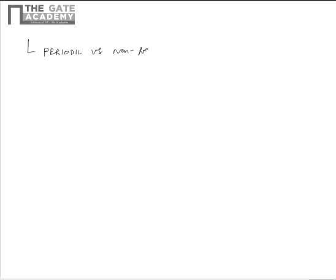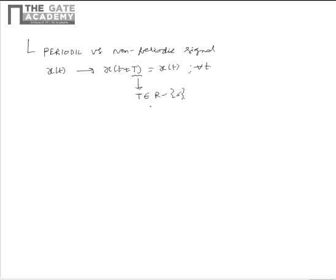Now let us look into another classification of the signal, which is periodic versus non-periodic signals. We know that a signal X(t) is periodic if it satisfies the condition X(t + T) = X(t) for every t. Here, capital T is called the period of the signal and T should belong to ℝ minus {0}, meaning it should be a non-zero real number. The minimum value of T which satisfies this condition is called the fundamental time period of the signal.